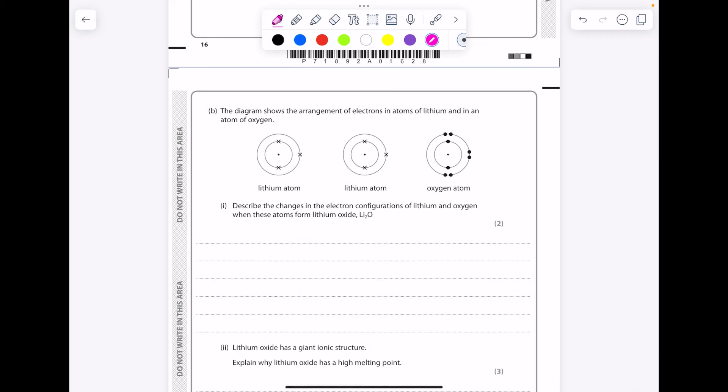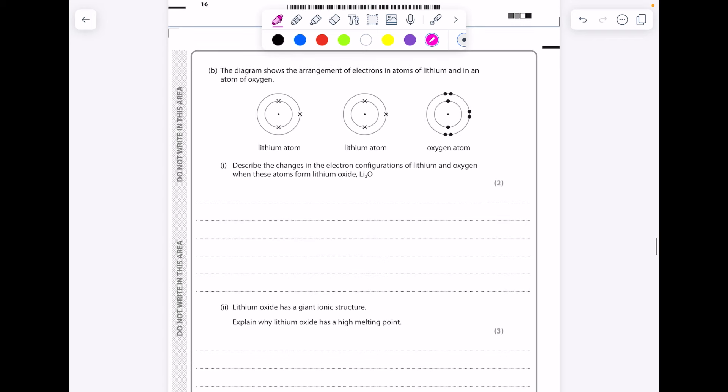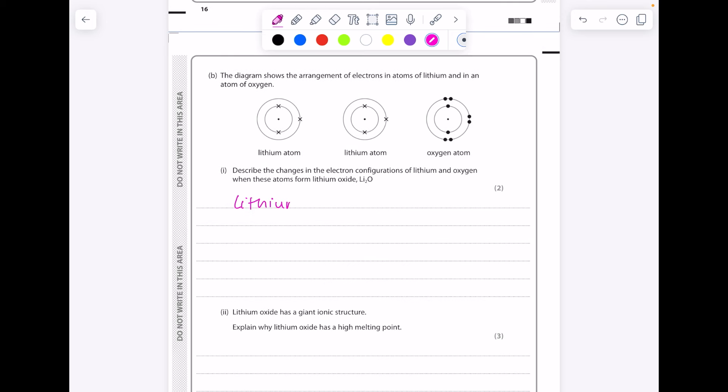The diagram shows the arrangement of electrons in atoms of lithium and in an atom of oxygen. Describe the changes in the electronic configurations when these atoms form lithium oxide. So what you can see taking place here is that for both atoms to have a full outer shell, each of the lithium atoms needs to lose an electron and then the oxygen atom needs to gain two electrons. So write their new electronic configuration. It's just 2 for lithium, and oxygen gains two electrons to become 2,8 as its new electronic configuration.